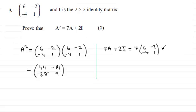Plus 2 times the identity matrix [1, 0; 0, 1]. We multiply each element by 7, giving us [42, -14; -28, 7]. Then we multiply the identity matrix by 2, giving us [2, 0; 0, 2].